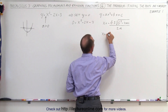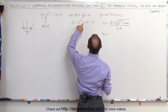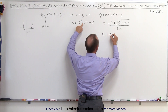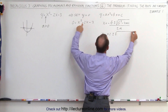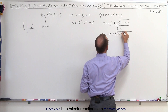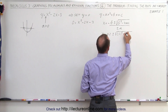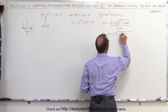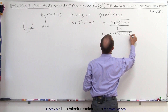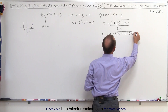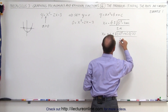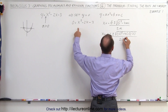So we get x is equal to minus b — but b is negative 2, so minus times negative 2 would be plus 2 — plus or minus the square root of b squared, which is negative 2 quantity squared, minus 4 times a, which is 1, times c, which is negative 3, all divided by 2 times a, which is 2 times 1.